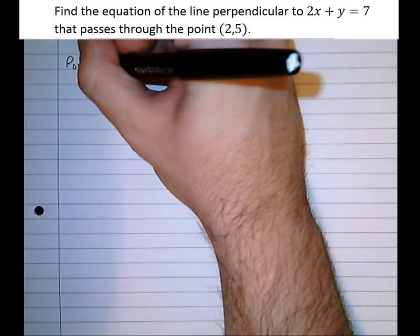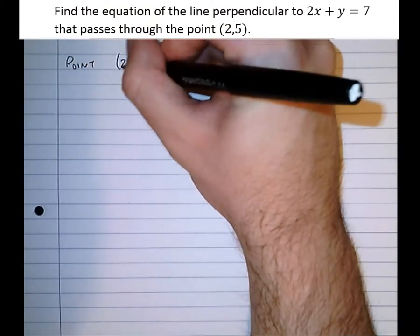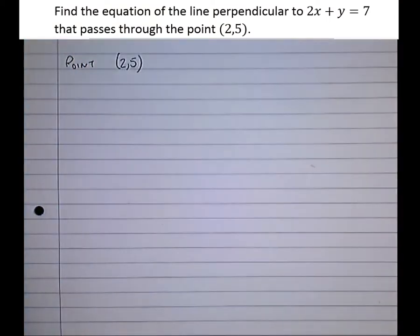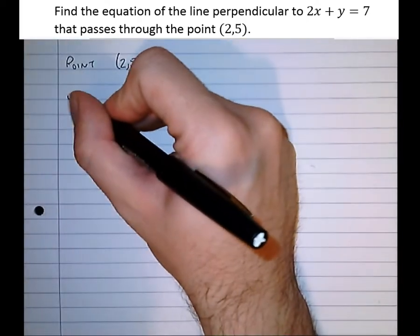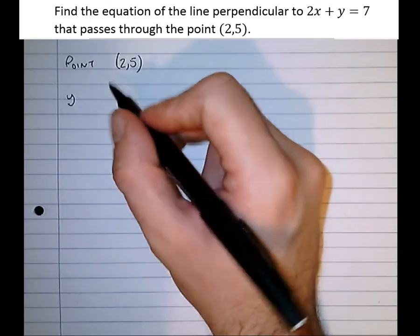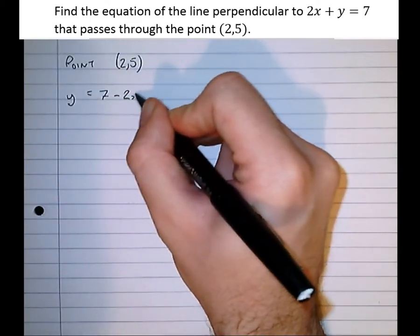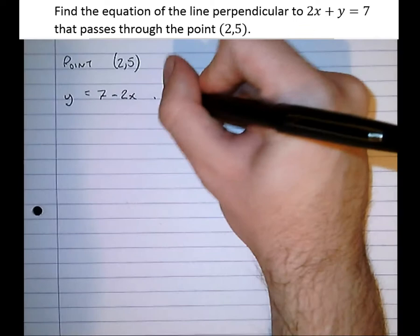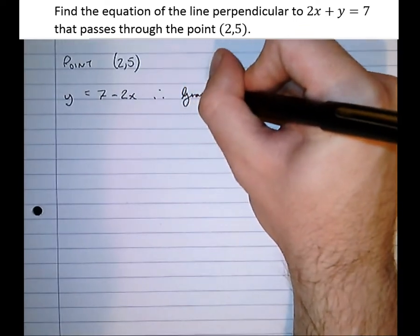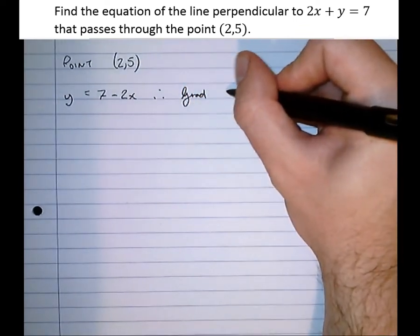Well, we've got our point 2, 5, but now we need a gradient. We can't directly read the gradient off this because it doesn't say y equals yet. So let's rearrange that. If we take the 2x across we get y equals 7 take 2x. Therefore the gradient of that line is minus 2.